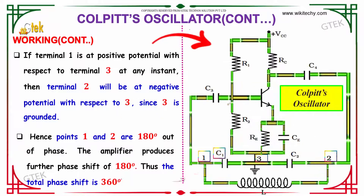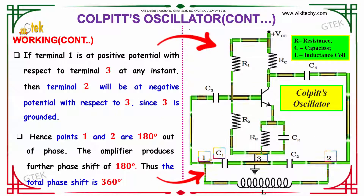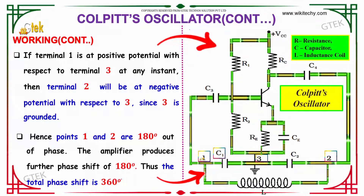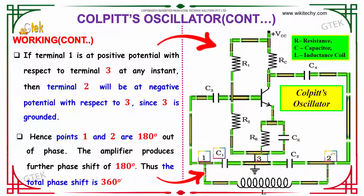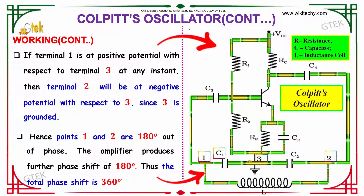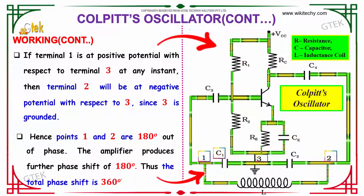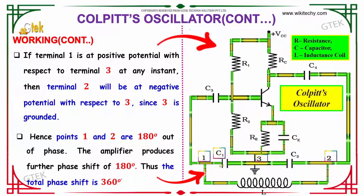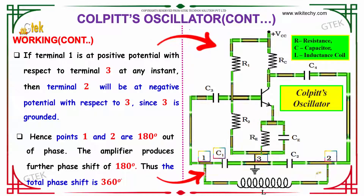If terminal 1 is at a positive potential with respect to terminal 3 at any instant, then terminal 2 will be at a negative potential with respect to terminal 3, since 3 is grounded. Hence, points 1 and 2 are 180 degrees out of phase. The amplifier produces a phase shift of 180 degrees, giving a total phase shift of 360 degrees.